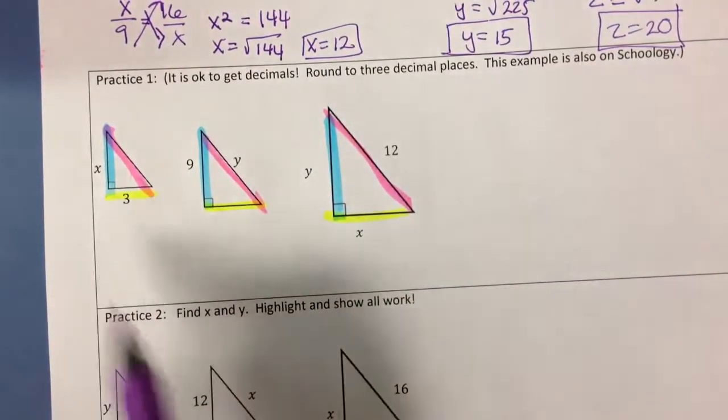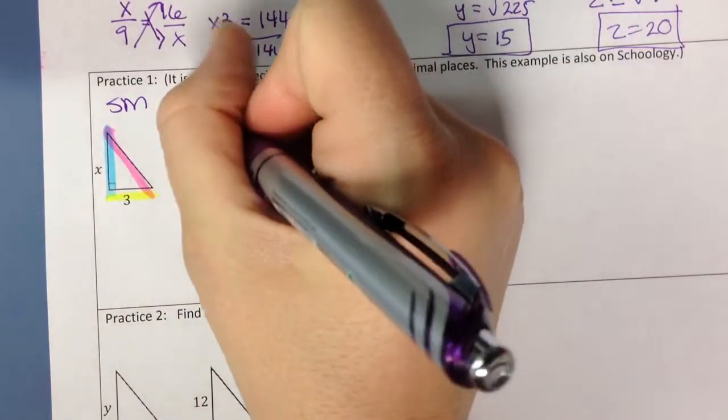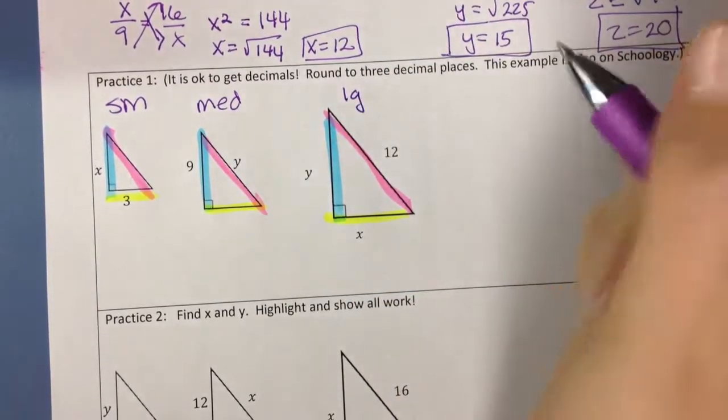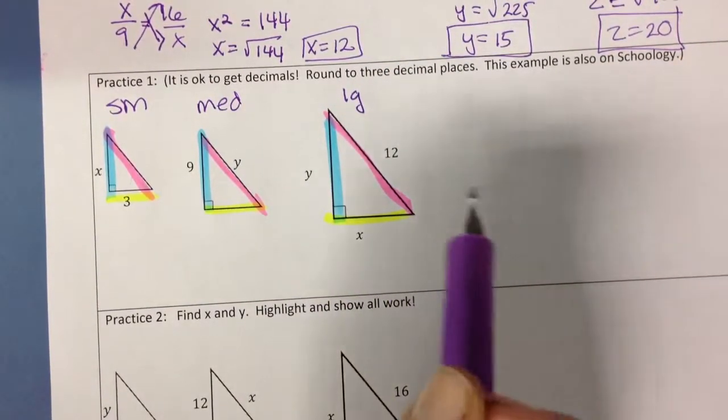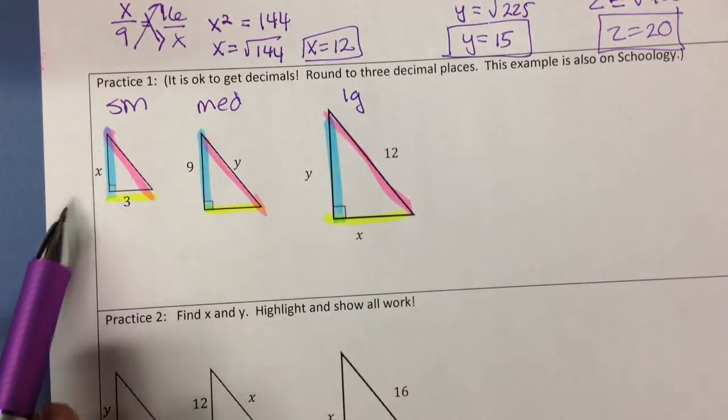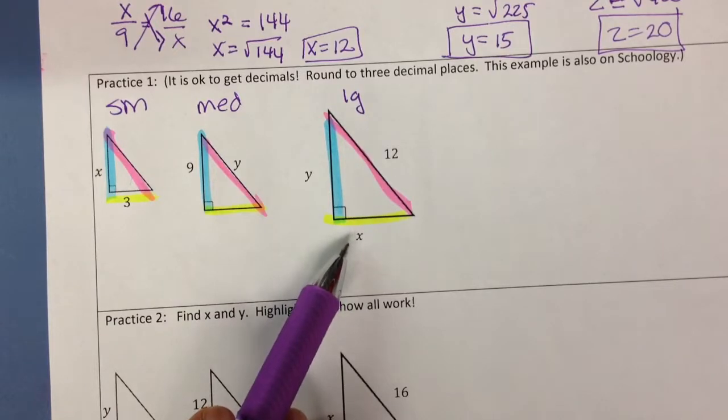Alright, so if I'm looking for x, there's an x on my small triangle. There's no x on my medium, but there's an x on my large. So I'm going to write a ratio. I'm going to use my small and my large. And if I look, my x is blue here and yellow here. So I've got to use blue to yellow.